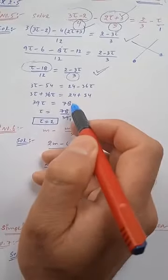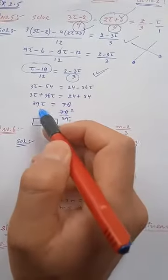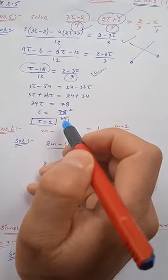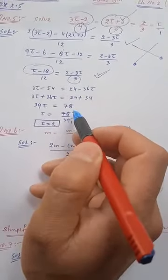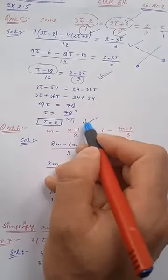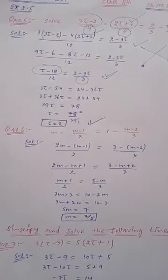So t will be equal to 78 upon 39. Because 39 is in the multiplication, when we transpose it comes in the denominator. So 39 ones are 39, twos are 78. And then you got value of t as 2. Hope you understood. Thank you and have a nice day. Bye, take care.